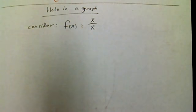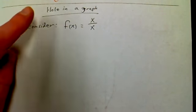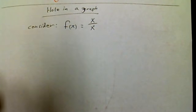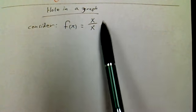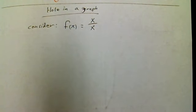Okay guys, the last thing I want to talk about from section 3.5 is a hole in the graph. What the heck do I mean by a hole in the graph?